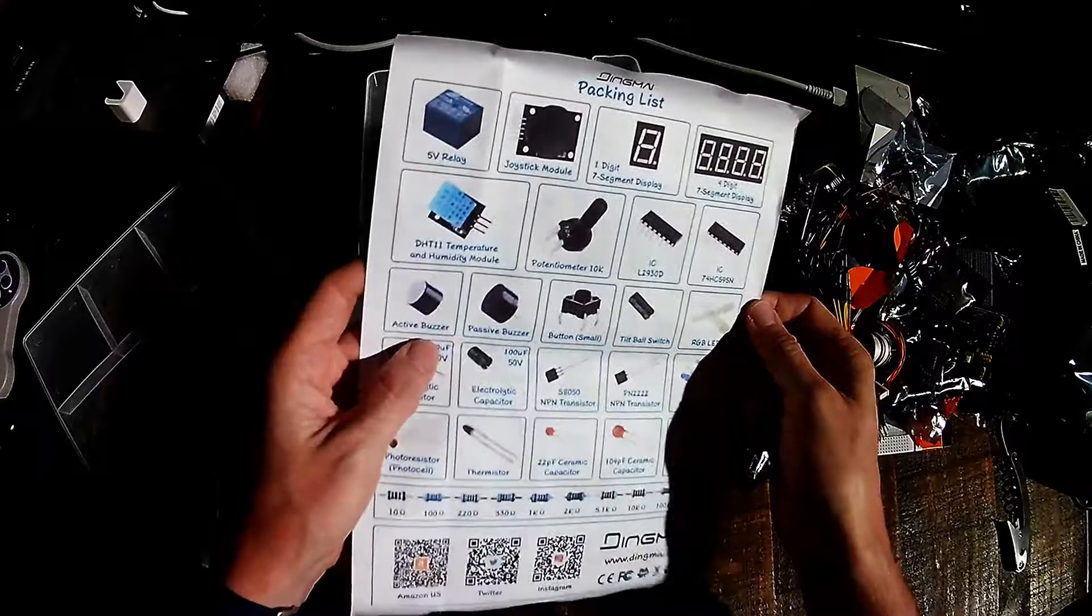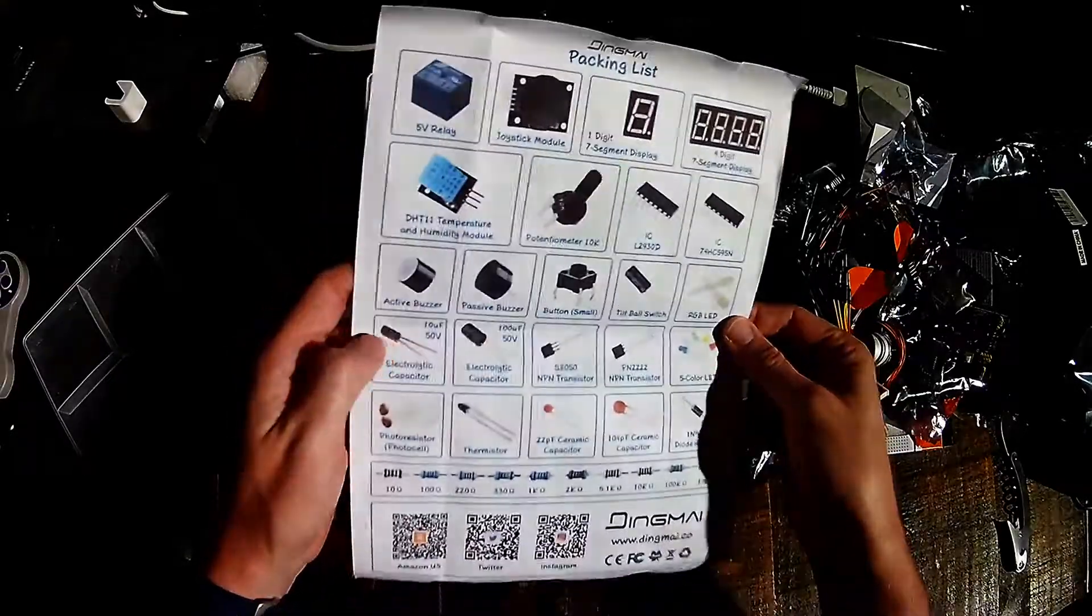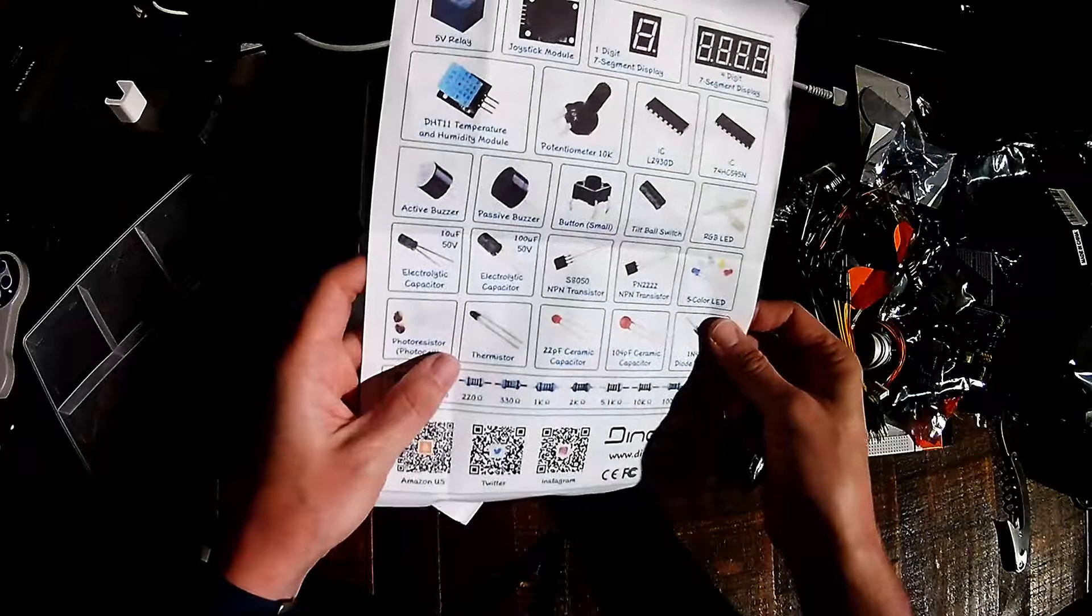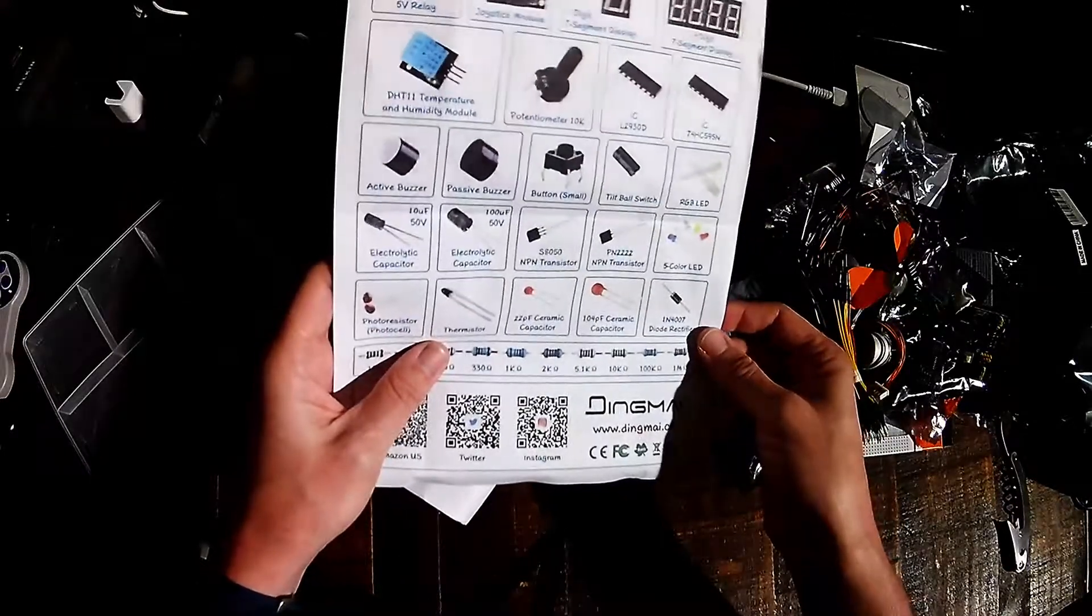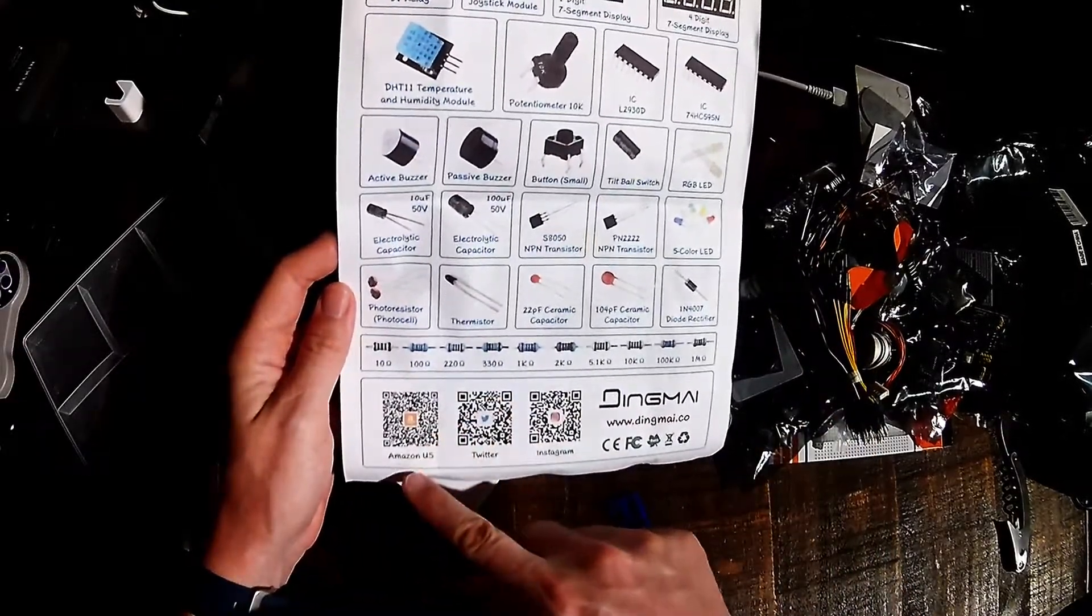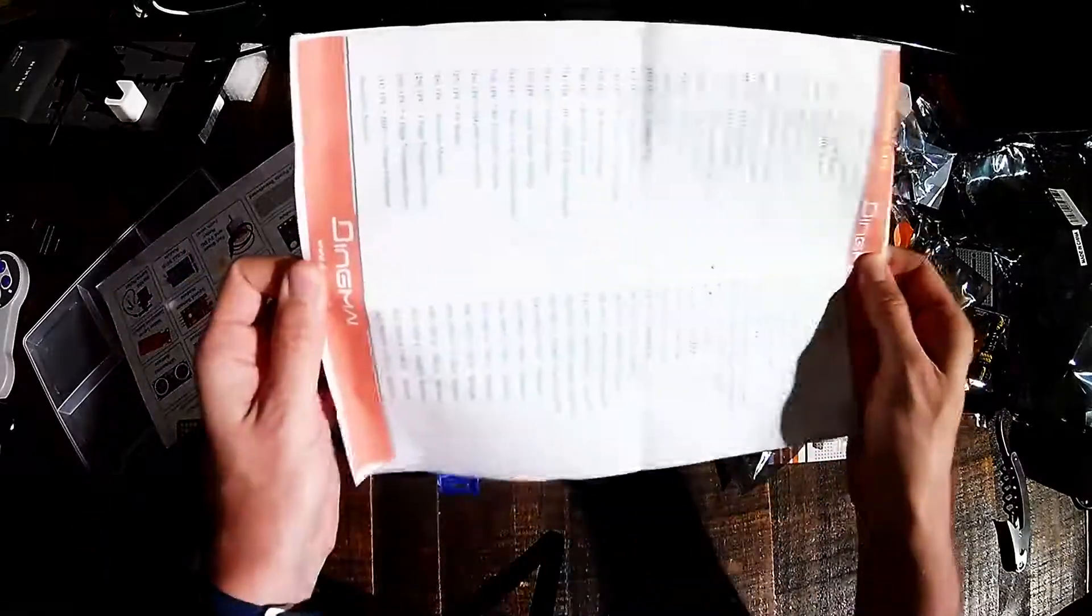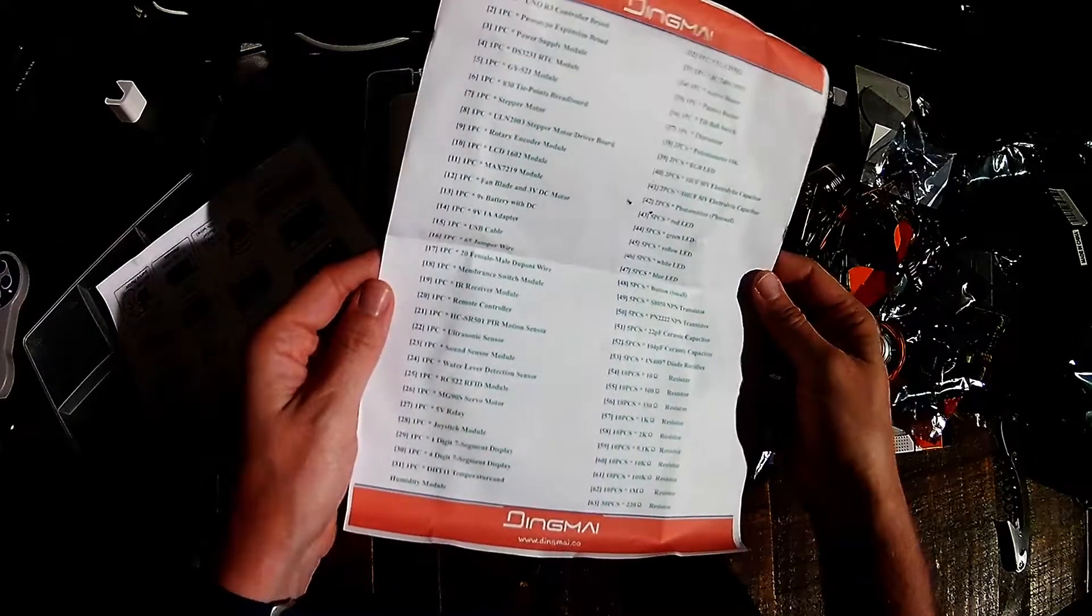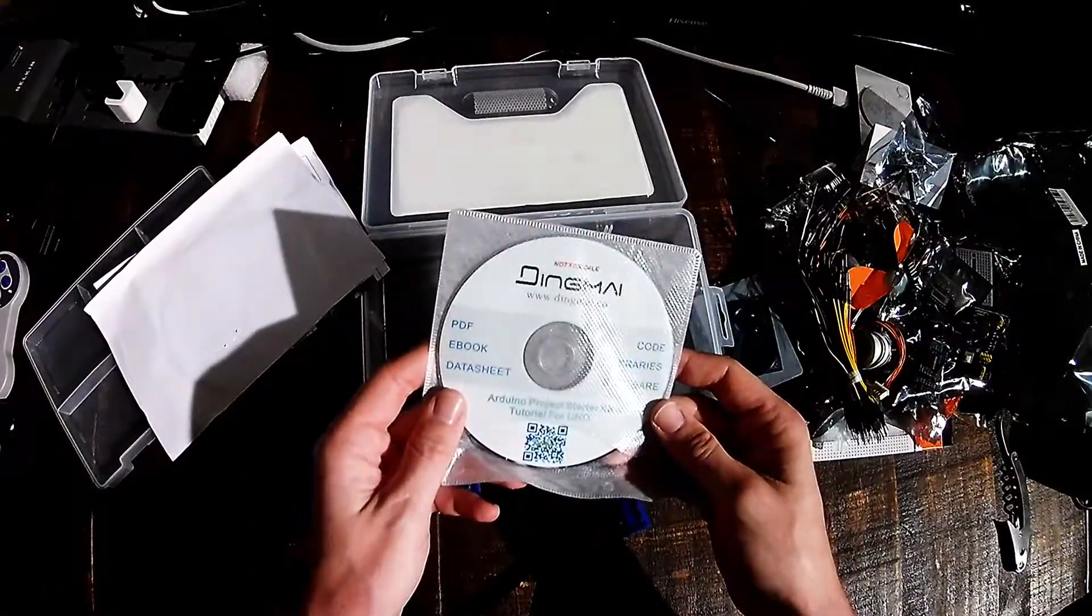Potentiometer. You've got a buzzer. A passive buzzer. Button. Tilt switch. RGB LEDs. Electrolytic capacitors. You've got NPN transistors. Five color LEDs. Photoresistors. Thermistor. 22 picofarad ceramic capacitor. Another ceramic capacitor. And then a diode. They give you a number of resistors in this kit. And here's a list of every piece in the kit. A lot of components. You could certainly do a lot with this. Let's take a look at this starter kit tutorial.